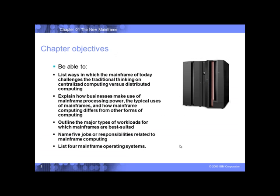Let's look over the objectives of this chapter. This is chapter one from the textbook. We're going to list the ways in which mainframes of today challenge traditional thinking on centralized computing versus distributed computing. By distributed computing, I mean the Intel architecture, x86, including Mac, and also including personalized devices like smartphones and tablets — those are distributed devices. The mainframe is centralized computing, so we'll look at the comparisons between those two types of architectures.